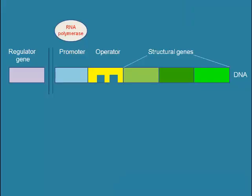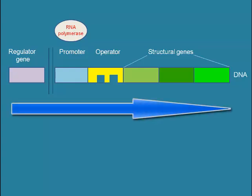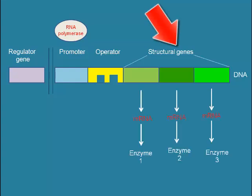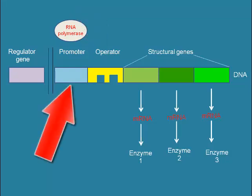An operon is a unit of DNA containing a cluster of genes under the control of a single section of DNA. The operon components are structural genes, which lie immediately next to each other. They code for enzymes to break down lactose and are transcribed as a group. The operator is the on-off switch of transcription — a short sequence of DNA where the repressor binds, preventing RNA polymerase from attaching to the promoter. The promoter is a short sequence of DNA where RNA polymerase first attaches when the genes are to be transcribed.